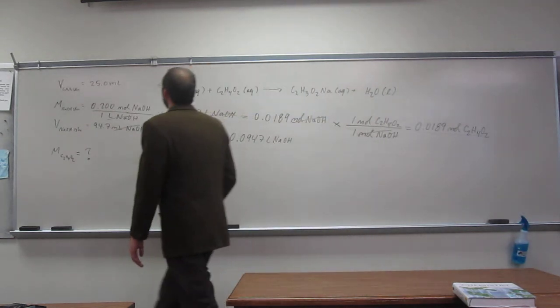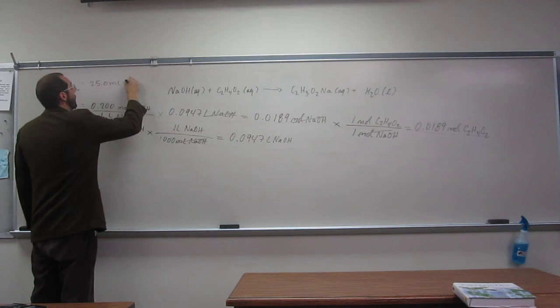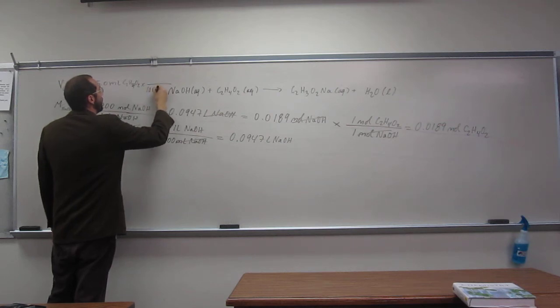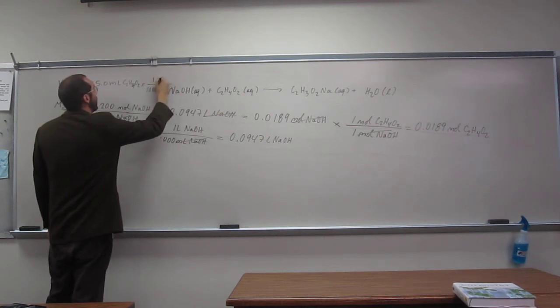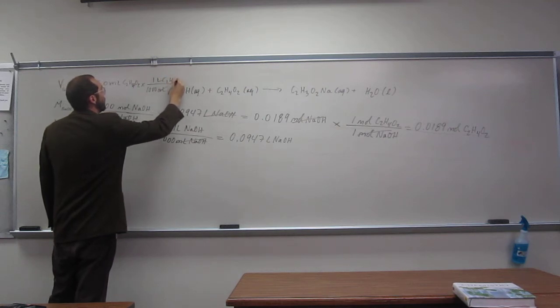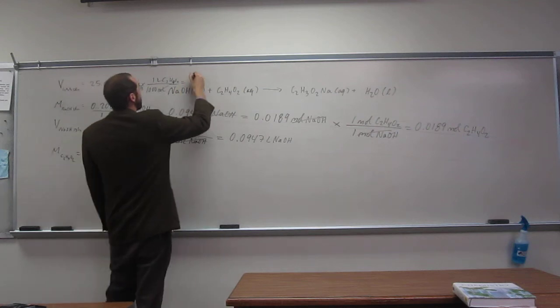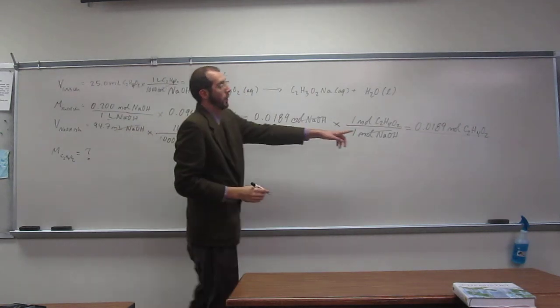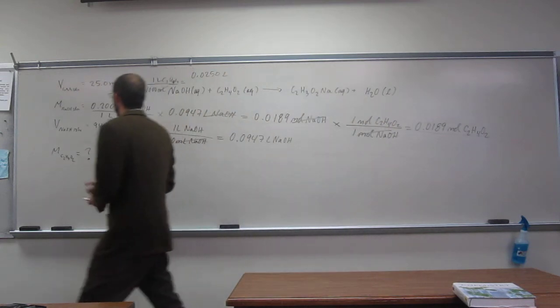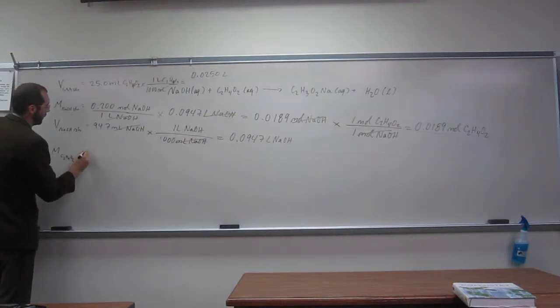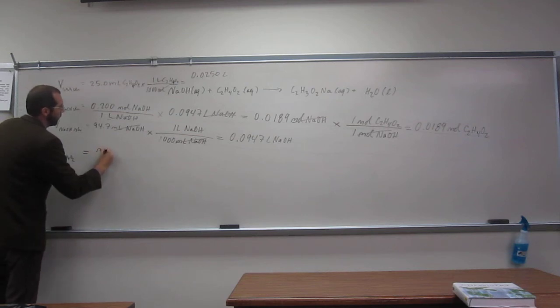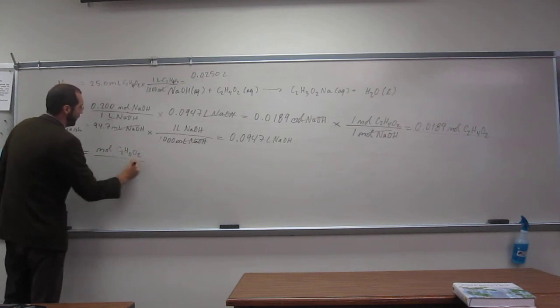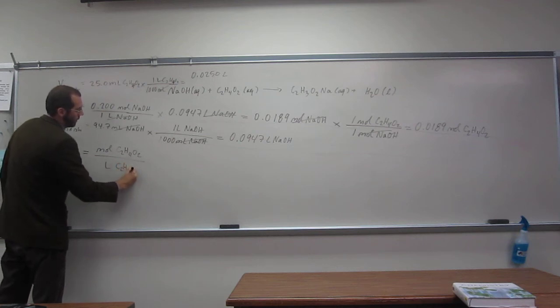So, that's going to be 0.0250 liters of acetic acid. So, how do I figure out what the moles are? So, remember, the molarity is the number of moles of C2H4O2 divided by the number of liters of C2H4O2. And we have both of those numbers now, correct?